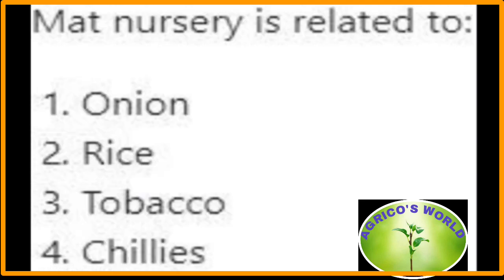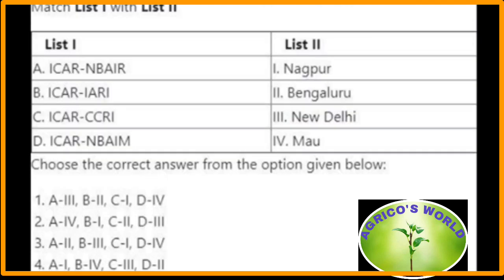Mat nursery is related to rice. Matching of list one with list two: ICAR-NBAIR — National Bureau of Agriculturally Important Resources — is located at Bangalore; ICAR-IARI — Indian Agricultural Research Institute — is located at New Delhi; ICAR-CICR — Central Institute for Cotton Research — is located at Nagpur.